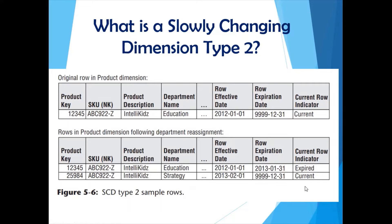If you want to see which is the latest record, you can filter by the row expiration date. If you want to see when the value changed, you can check the row effective date or row expiration date of the previous record. Between 1st January 2012 and 31st January 2013, the department name was Education; after that it was updated to Strategy. There is also a current row indicator column — the active record is marked 'current' and the historical record is marked 'expired'.